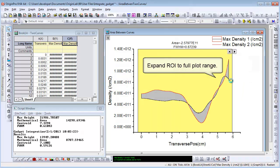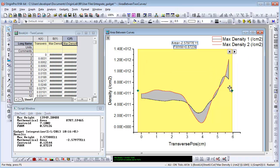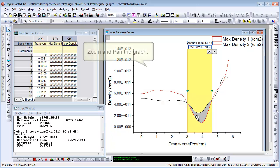You can choose Expand to Full Plots Range context menu to calculate the area between full range of two data plots. You can also resize the ROI box to be between two intersections.